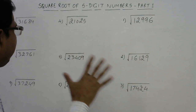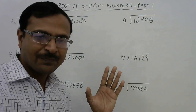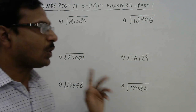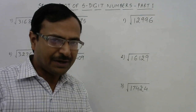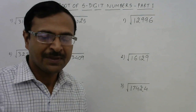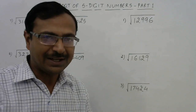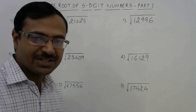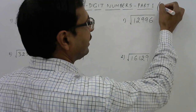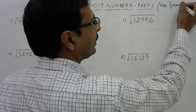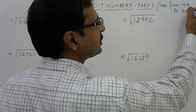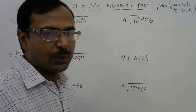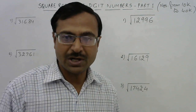The numbers I have taken start from 10,000 onwards up to 40,000. You can take any number and find the square root virtually in five seconds — very accurately. This is part one of a two-video series on finding the square root of five-digit numbers, covering numbers from 10,000 to 40,000.